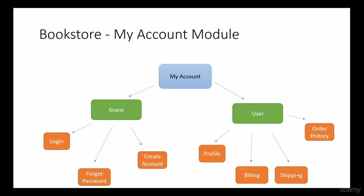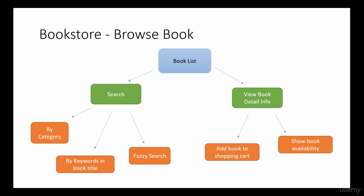Shipping information consists of addresses bound to the user — users can have multiple addresses and choose whichever they prefer at checkout. The order history displays all orders the user has placed, and users can also view the detailed information for each individual order. That covers the My Account module.